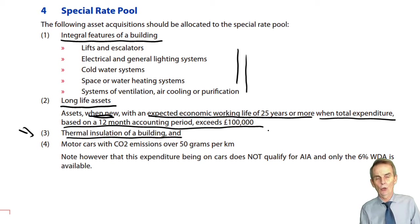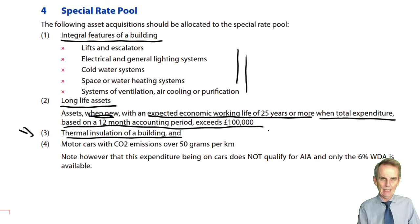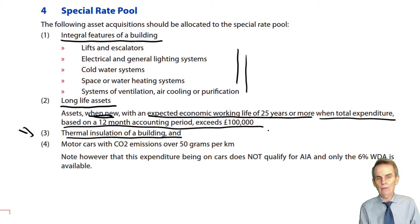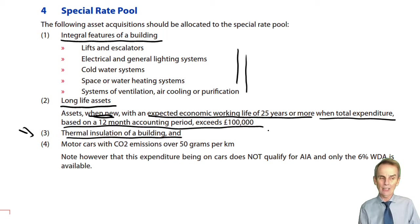So if you're told that two such items were bought during the period, one for £80,000 — it itself is not in excess of £100,000 — but another item for £50,000: 80 plus 50 is 130, which exceeds £100,000. So those two items will be allocated as long life assets to the special rate pool.